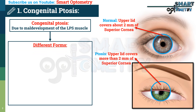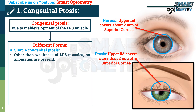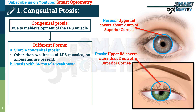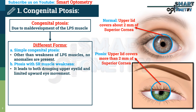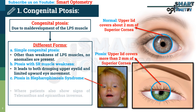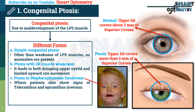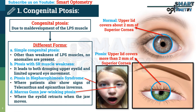It may occur in different forms. A: Simple congenital ptosis — other than weakness of the LPS muscle, no anomalies are present. B: Congenital ptosis with superior rectus muscle weakness — it leads to both drooping upper eyelid and limited upward eye movement. C: Ptosis as part of blepharophimosis syndrome — patients also show signs of telecanthus and epicanthus inversus. D: Marcus Gunn jaw-winking ptosis — where the eyelid retracts when the jaw moves.